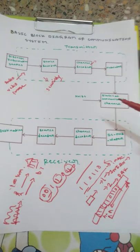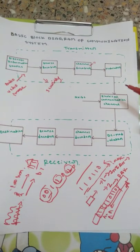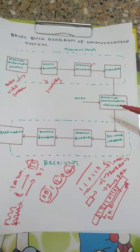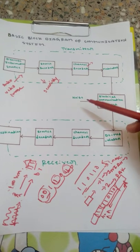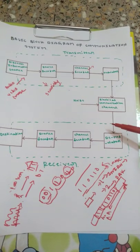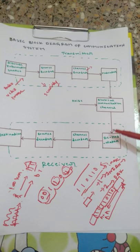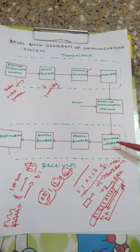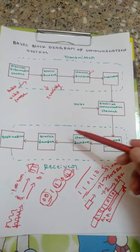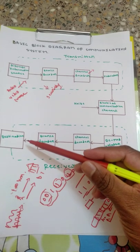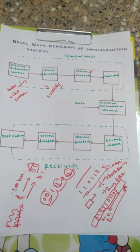The electrical communication channel is the wireless or wired medium through which the signal is transmitted, and noise will be added during transmission. The signal then passes through the demodulator, channel decoder, and source decoder before finally reaching the destination. Thank you for watching.